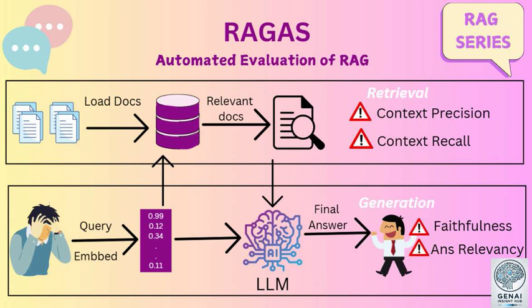How does RGAS actually measure all of this? It sounds pretty complex. RGAS actually uses another large language model, similar to ChatGPT, to do the evaluating — it's AI judging AI, which turns out to be incredibly effective. For faithfulness, RGAS takes the AI's answer and breaks it down into individual statements. Then for each statement, it asks the evaluating LLM: can this statement be proven true based on the information the AI retrieved? It's like having a superpowered fact-checker that can analyze every detail of the AI's response.